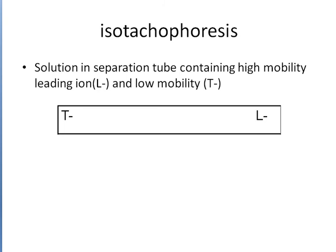Today we are discussing about electrophoresis — specifically isotachophoresis. Again: iso means same, toca means speed, and phoresis means separation of particles like proteins, carbohydrates, vitamins, and minerals. We have discussed the procedure of isotachophoresis and electrophoresis and these techniques.